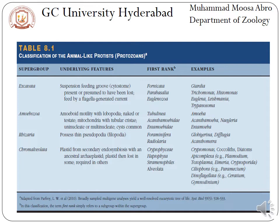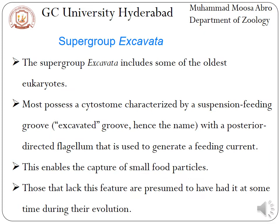This is a recap: protozoa are divided into four supergroups. One is Excavata, second Amoebozoa, third supergroup is Rhizaria, and the fourth supergroup is Chromalveolata.